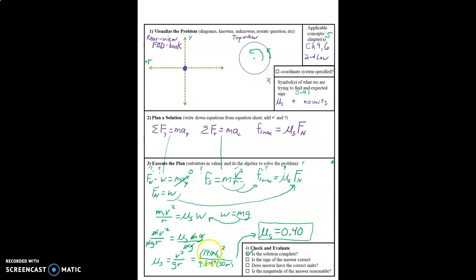Is the sign of the answer correct? Yeah we had positive, positive, positive, positive, and our answer came out positive, and that's what we expected. Does it have the correct units? We've got meters per second squared divided by meters per second squared times meters. In the top we're going to have meters squared per second squared, and in the denominator we're also going to have meters squared per second squared. So that's going to come out to no units, and that's exactly what we expected. It's dimensionless.